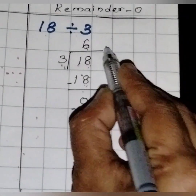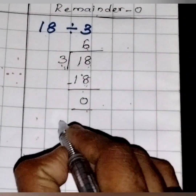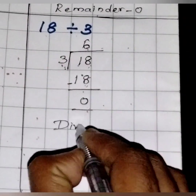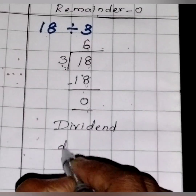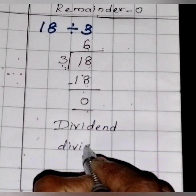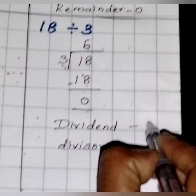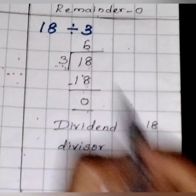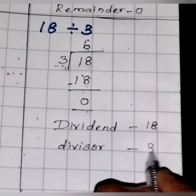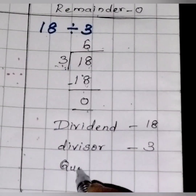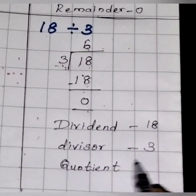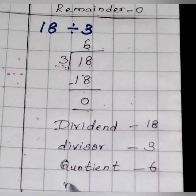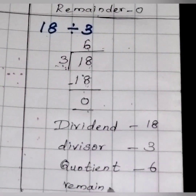Now, what are the things we have to find? We found the dividend — 18. The divisor is 3, the quotient is 6, and the remainder is 0.